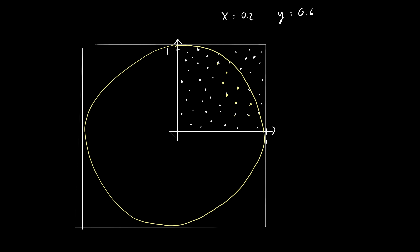For example, let's take this one. That line — what is the distance? Well, the distance is basically the square root of x squared plus y squared, right? And then if that is smaller than one, then it's in the circle. If it's bigger than one, then it's outside the circle, but still inside the square.